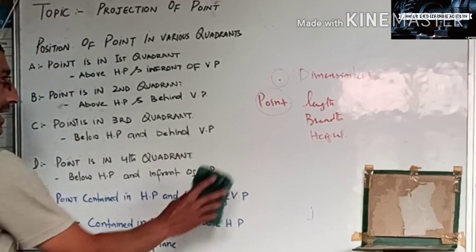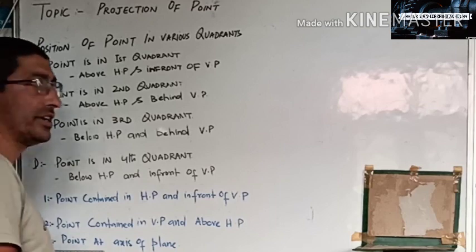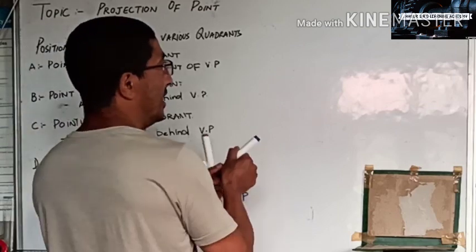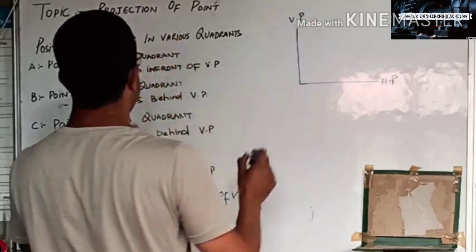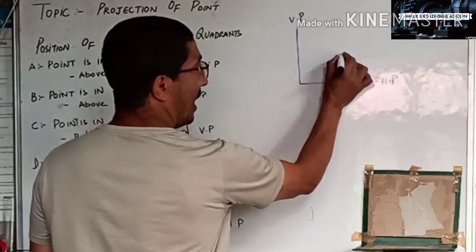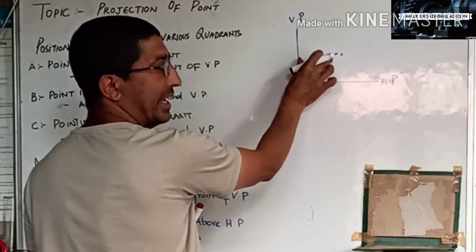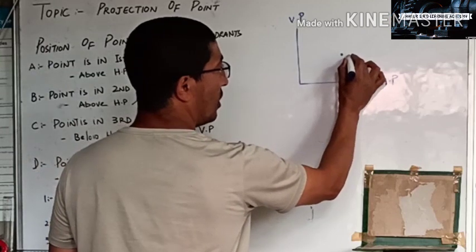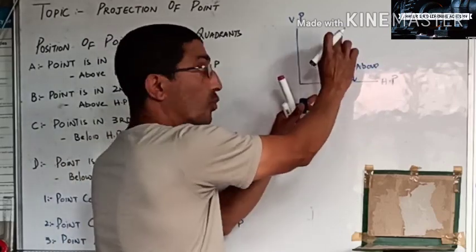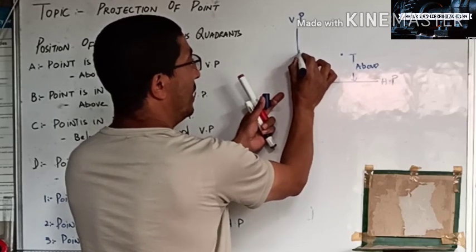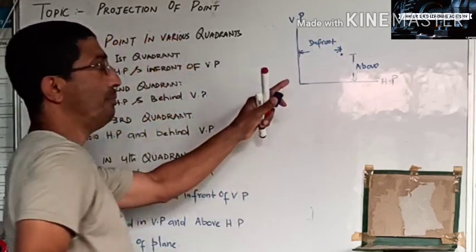So if we look at the important positions — the point is in the first quadrant. When the point is in the first quadrant, this is my HP and this is my VP. The point will be above the HP and in front of the VP. So in the first quadrant, the point is above HP and in front of VP.